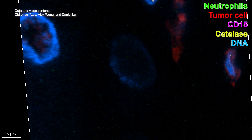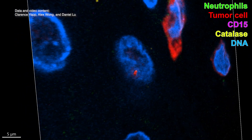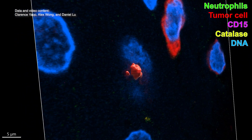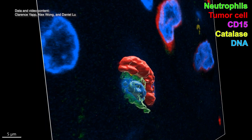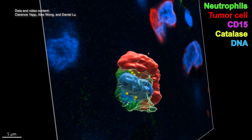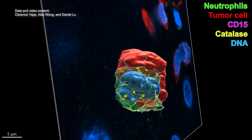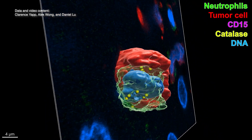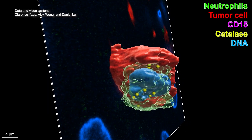Harvard Medical School scientists developed a new technique to create 3D images of human tissue samples, revealing key features about tissues that weren't previously visible. This will allow researchers to study cancer and other diseases in greater detail.